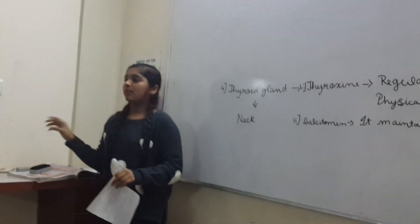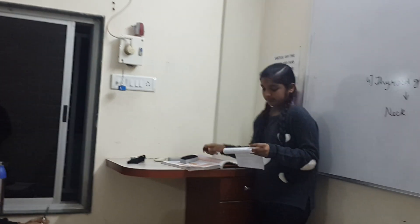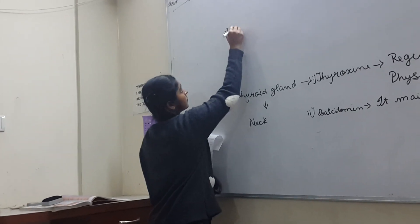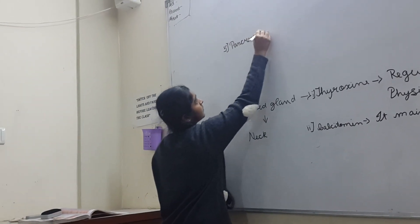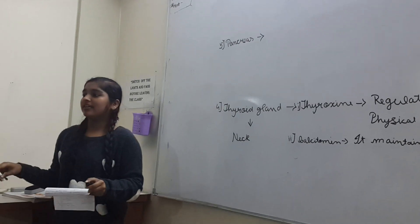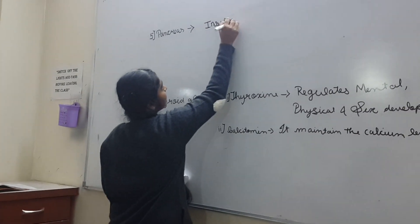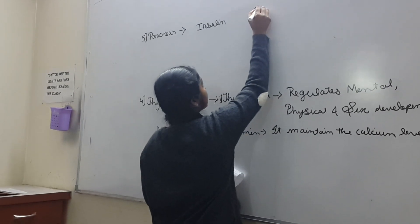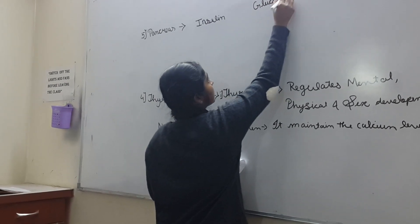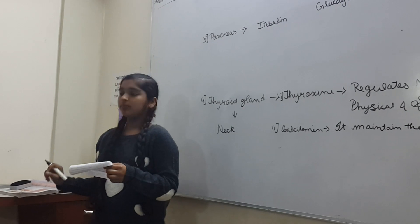As mentioned earlier about mixed glands, the next gland is the pancreas. Insulin and glucagon are the hormones secreted by this gland. Insulin maintains the blood sugar level and blood pressure.